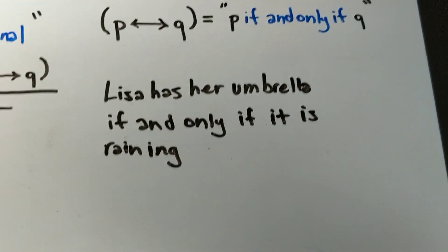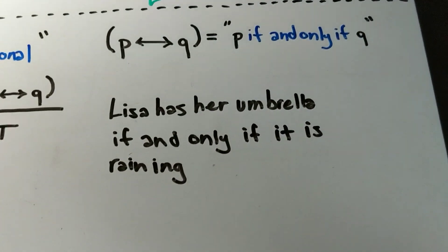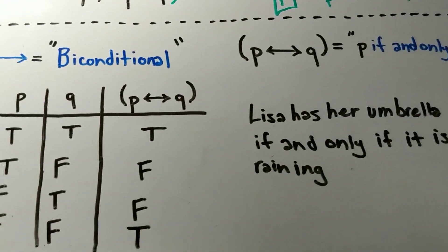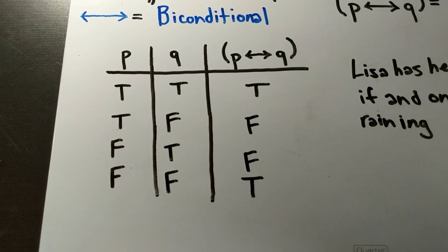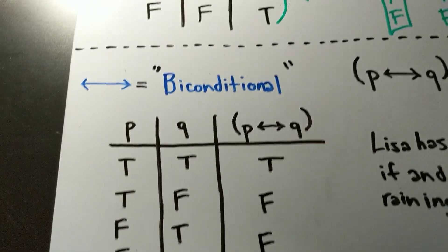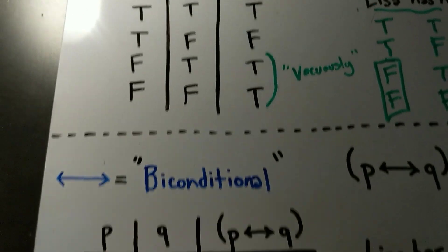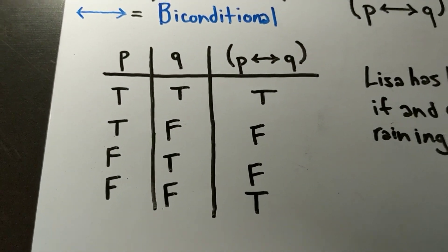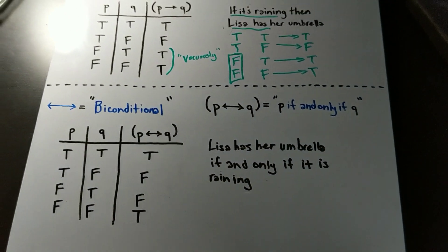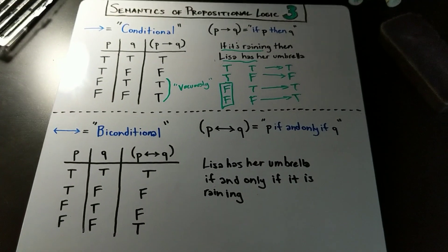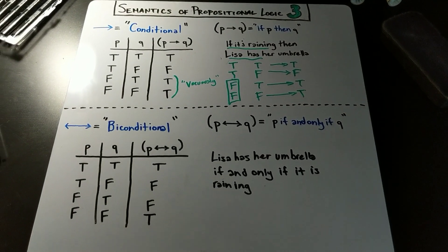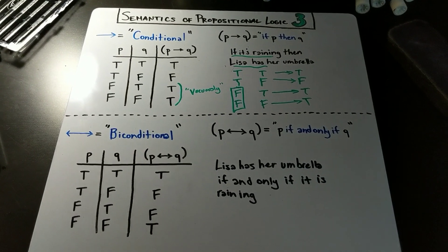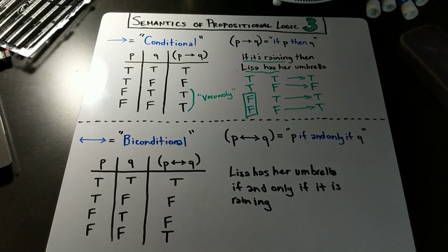You can follow natural language a little bit better with the biconditional than with the conditional. Just be careful with these symbols — make sure you are memorizing the truth tables and not relying on how you read them out loud. This is the last of our semantics of propositional logic. We're going to do some examples in the next video so we can play around with how these interact with each other.